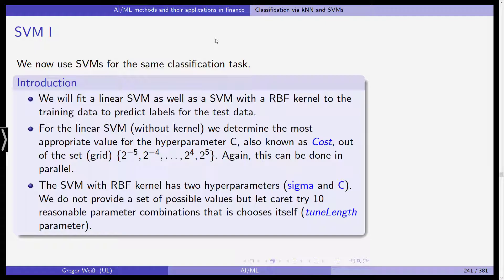You don't need to do this, but this is a good exercise to practice parallel computing in R. The support vector machine with the radial basis function kernel has two hyperparameters, sigma and C. We do not provide a set of possible values, but we simply let the caret package in R try out 10 reasonable parameter combinations and it chooses the combination itself. So this is tune length, the parameter tune length in the syntax of R and the caret package.